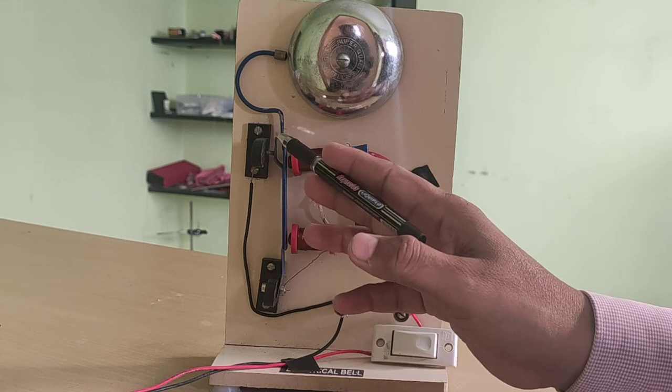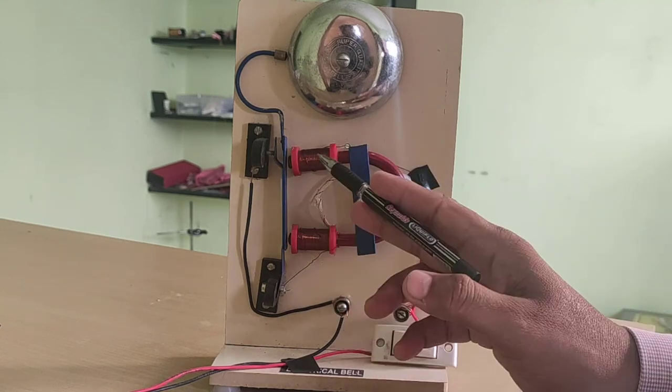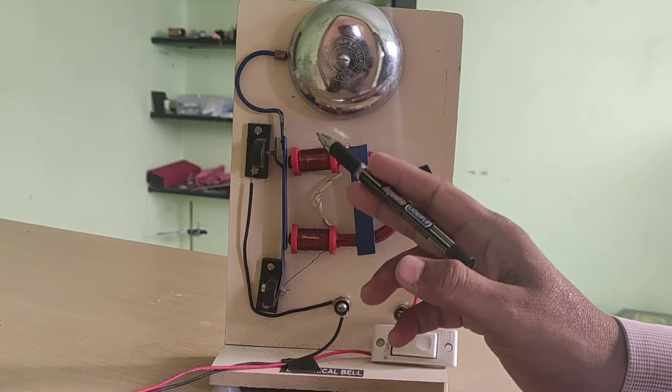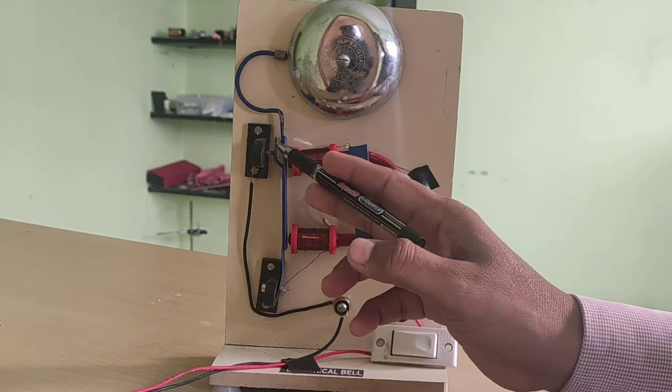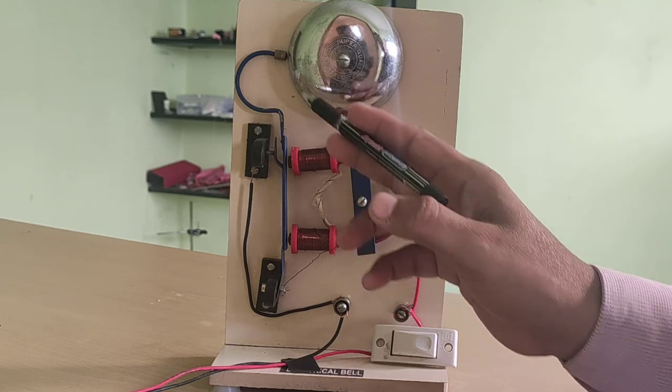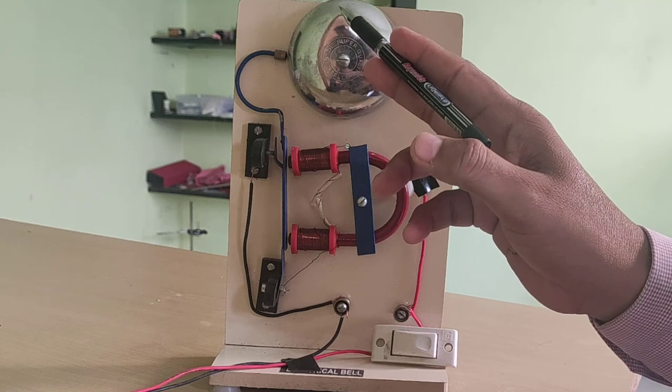But when it moves back, it comes in contact with the contact screw. The circuit is again completed, current flows, and this coil again becomes an electromagnet. This strip moves forward and the hammer strikes on the bell.